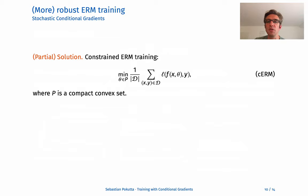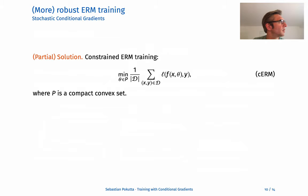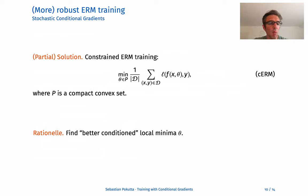A partial solution is to constrain the ERM training. Instead of picking theta from arbitrary sets, you restrict it to a compact set — for example, a 2-norm ball around the initialization — so the numbers aren't allowed to get too large. The rationale is to find a better-conditioned local minimum theta that gives similar performance as stochastic gradient descent but is hopefully more stable because we control the magnitude of the weight vector theta.